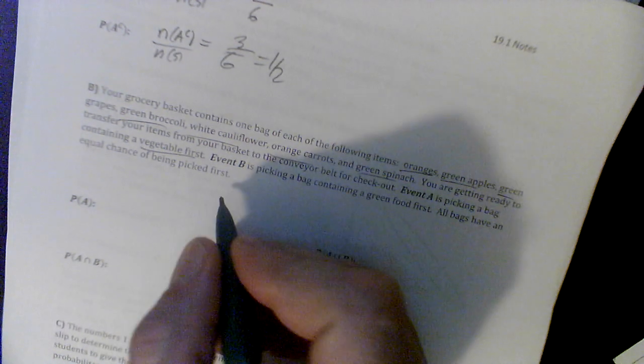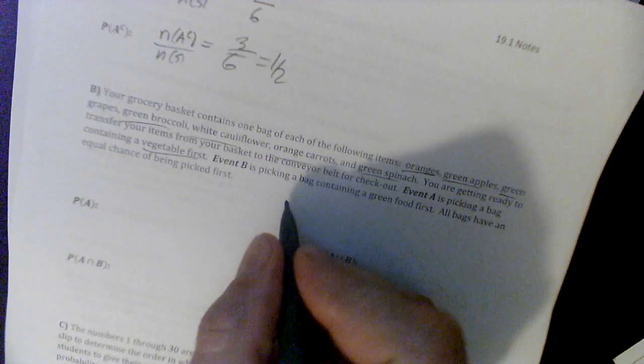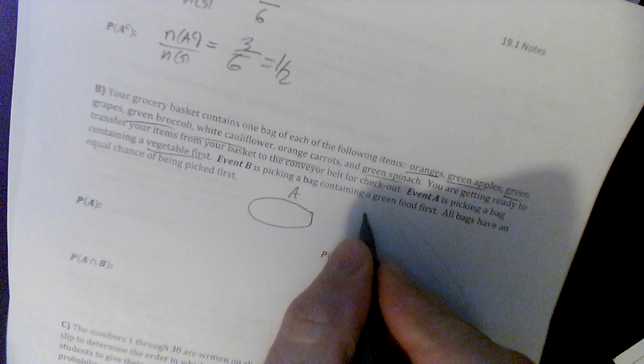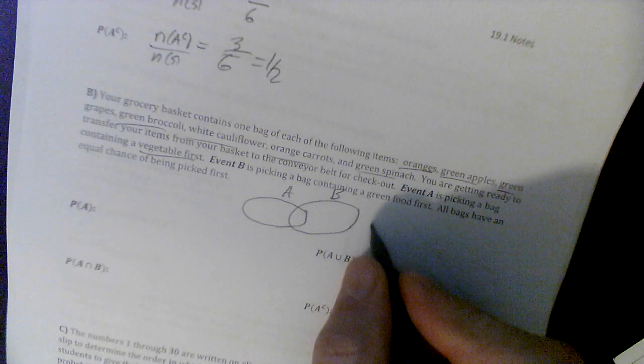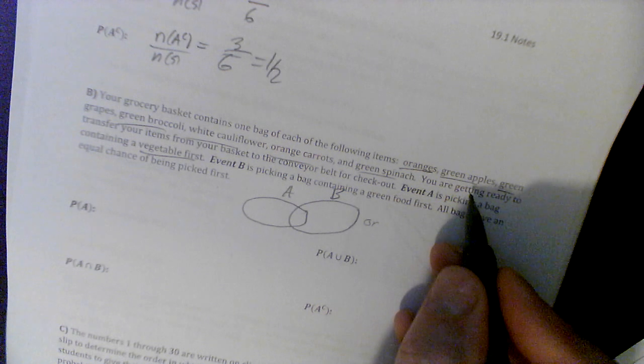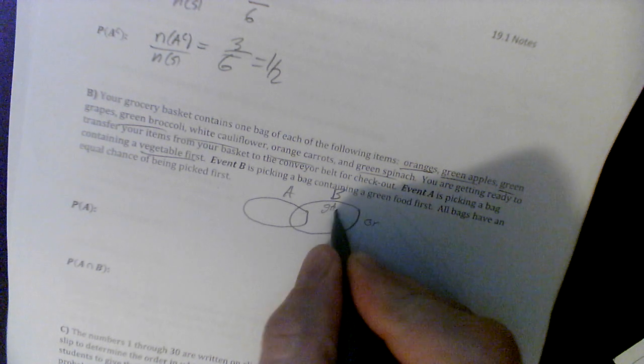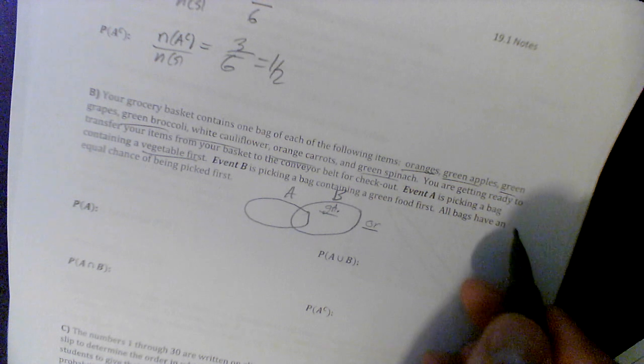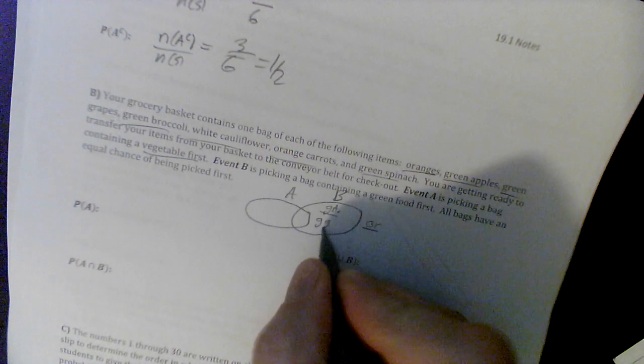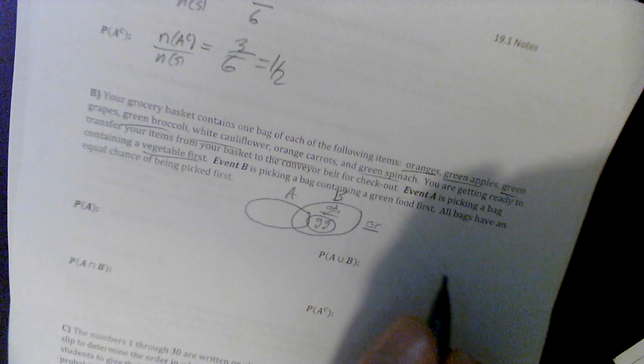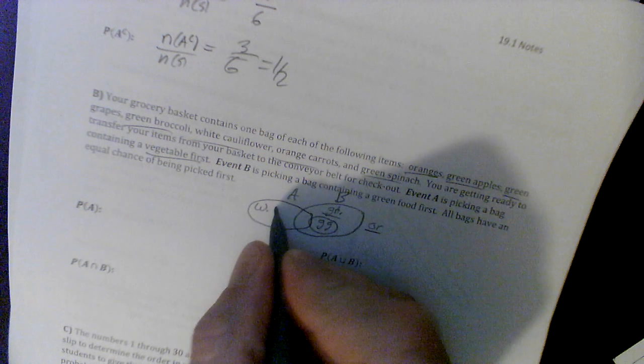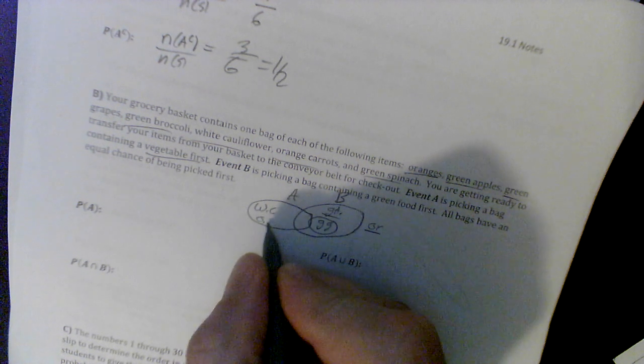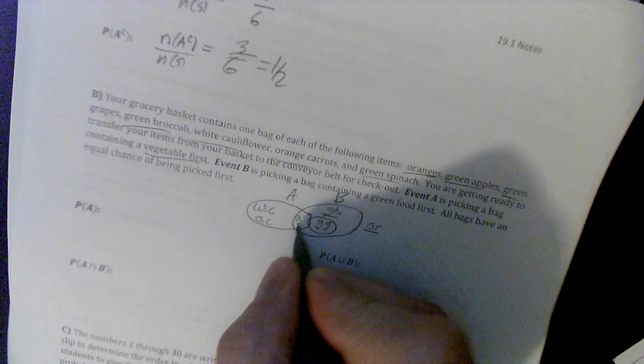Let's go ahead and say A, and we'll figure it out here. And B, and let's see if we can figure it out. Oranges are neither green nor vegetables, so oranges are going to be outside. Green apples, right here. Green grapes, right there. White cauliflower is here. Orange carrots, right here. Green spinach is both, right in here.